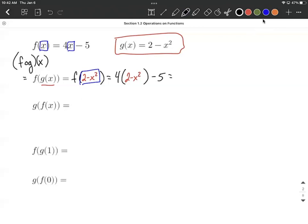We could simplify a little bit on this and this first one I will by distributing the 4. So we get 8 minus 4 x squared. Bring along that minus 5 and we can clean this up a little bit further by combining our like terms. The 8 minus 5 makes 3 minus 4 x squared.